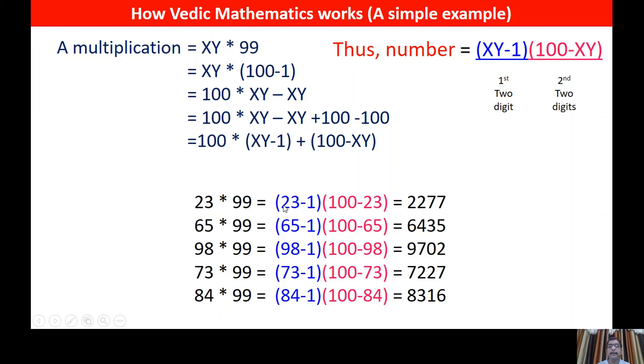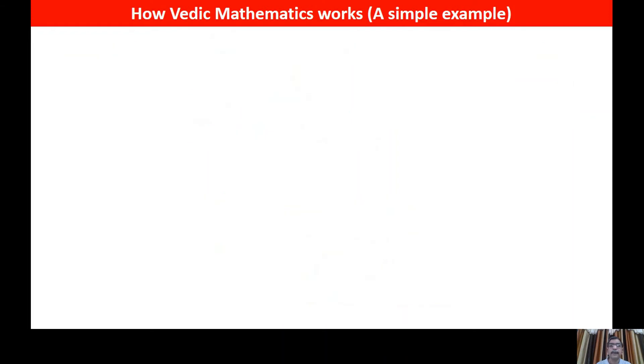So you need not multiply, you just do this simple tricks. For example, 84 into 99. 84 minus 1, so the first 2 digits is 83, and 100 minus 84, so second 2 digits are 16. And this is how it is done.